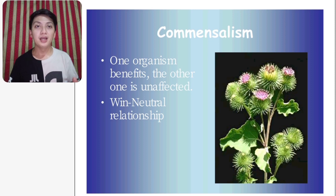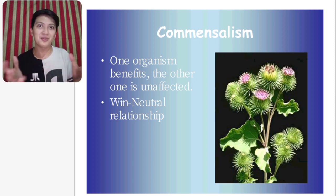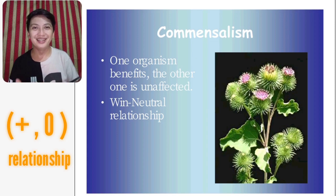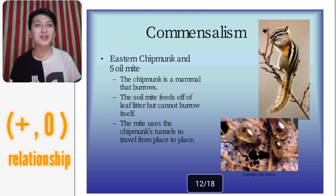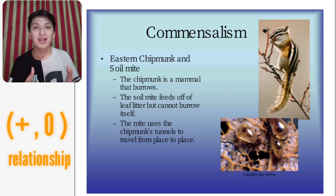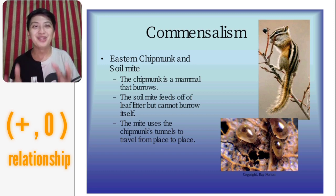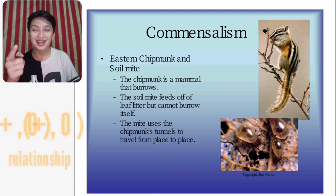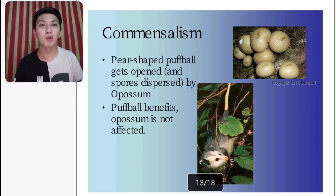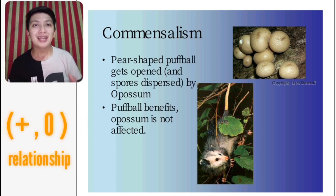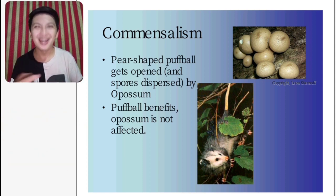We also have commensalism — one organism benefits while the other is unaffected. It's a positive-neutral relationship. For example, the eastern chipmunk and the soil mite: the chipmunk is a mammal that burrows, and the mite feeds off leaf litter but cannot burrow itself, so the mite uses the chipmunk's tunnel to travel from one place to another. Another example: pear-shaped puffballs get opened and dispersed by a possum — the puffballs benefit while the possum is not affected.